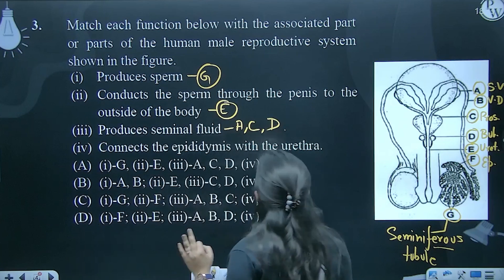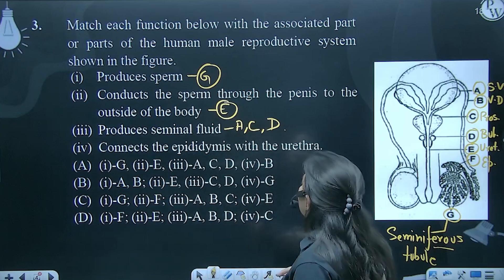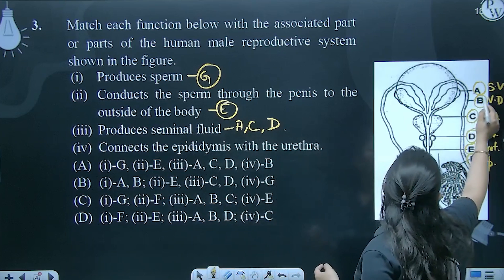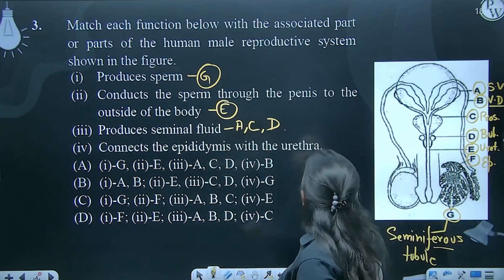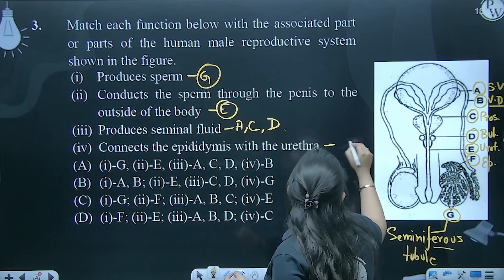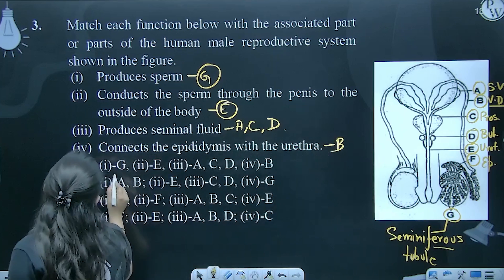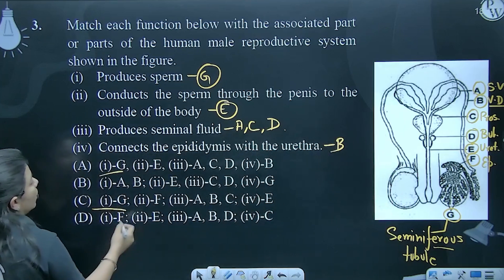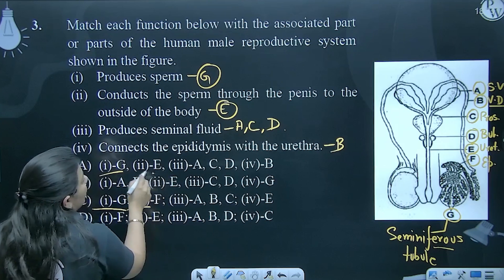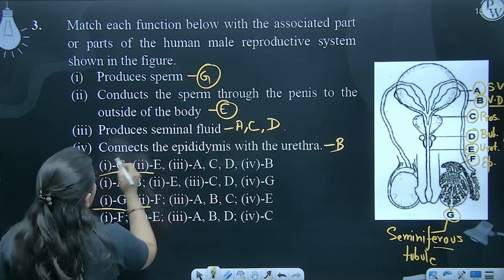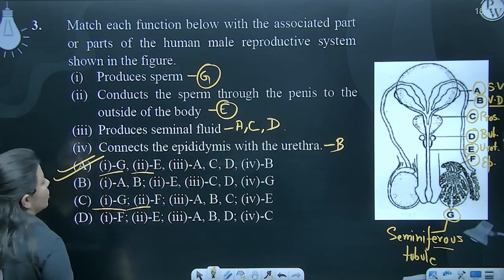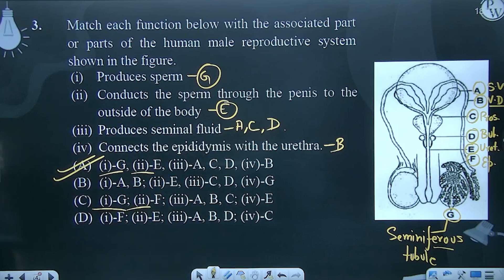Or connects the epididymis with the urethra. Epididymis ko urethra se connect kaun karta hai? Vas deferens connect karta hai. Vas deferens ka labeling hai B. It is very easy. One is G, two is E. We got our answer. Answer is option number A. Labeling karne ke baad summary jo hai woh humara bud jayega — kyunki diagram label kar liya, toh humari liye functions jo hain woh predict karna easy ho jayega.